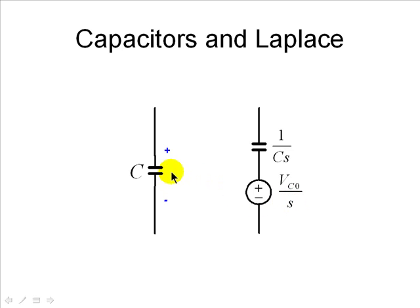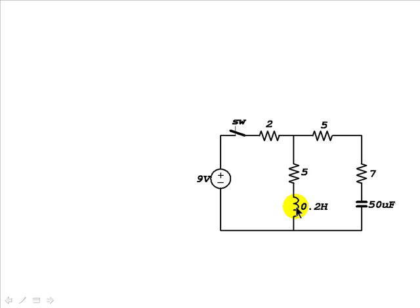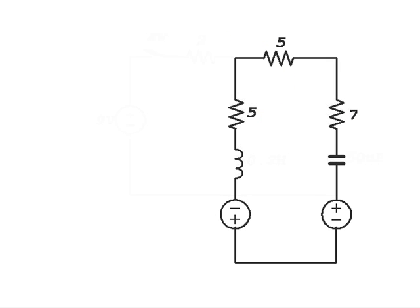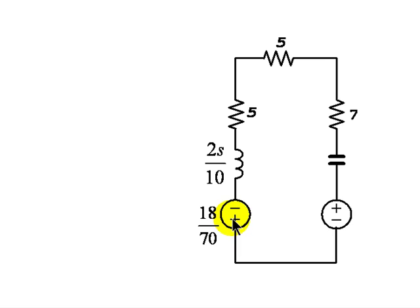For the capacitor, it is also represented by an impedance 1 over Cs in series with a source, where C is 50 microfarads. The source has the same polarity as the assumed positive voltage of the capacitor, with value VC(0) over S. We open the switch: the 2-ohm resistor disappears, the 9-volt source disappears, and the inductor and capacitor are replaced by their Laplace domain models. The inductor impedance is Ls = 0.2s = 2 over 10s, the source value is L·IL(0) = 18/70, and the capacitor source is VC(0) over S = 45 over 7S.